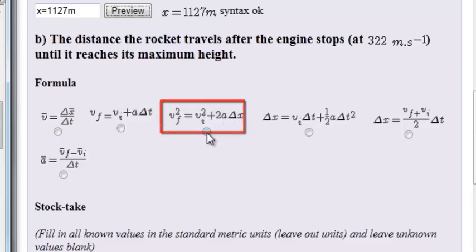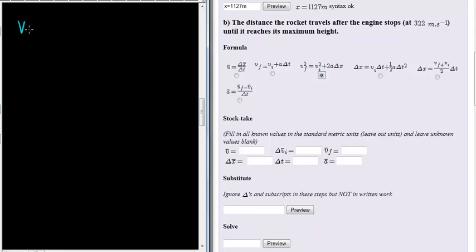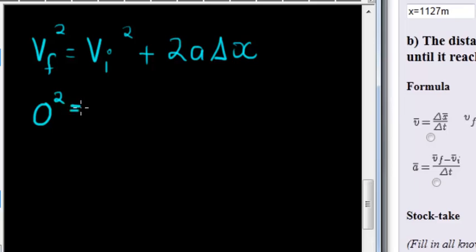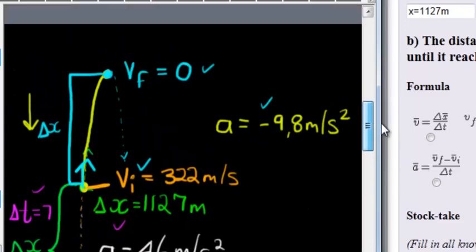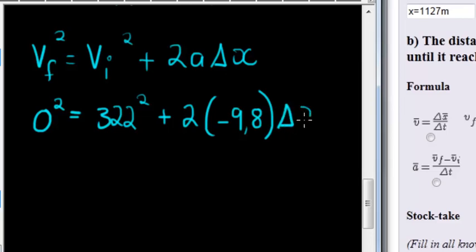The formula we're going to use is: vf² = vi² + 2aΔx. Substituting in: future velocity squared is zero squared, because the rocket reaches maximum height; initial velocity is 322 meters per second squared; plus 2 times acceleration. The only acceleration that now applies is the downward acceleration of gravity, so that is negative 9.8 — the engine has stopped so there's no other force working on it. Then ΔX is the value we are trying to calculate.